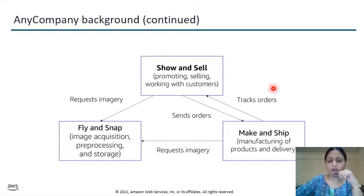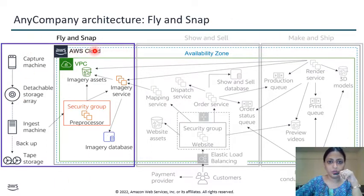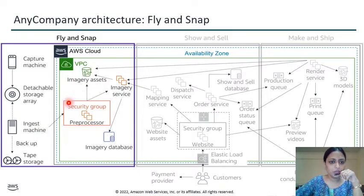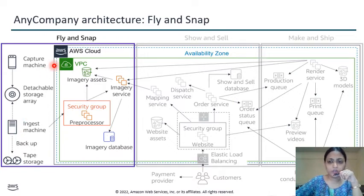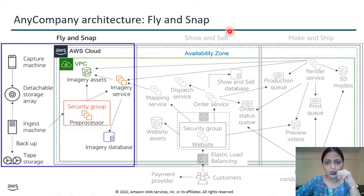By using this architecture and flowchart, you can perform your tasks. Here you have the architecture showing how you launch everything on the cloud. In the AWS cloud, we have an availability zone with a security group. You need to access the security group with the database and services, and connect it with ingest machines. You need detachable storage array as well as tape storage to complete the fly-and-snap part. One availability zone is for show-and-sell and another part is for make-and-shape.